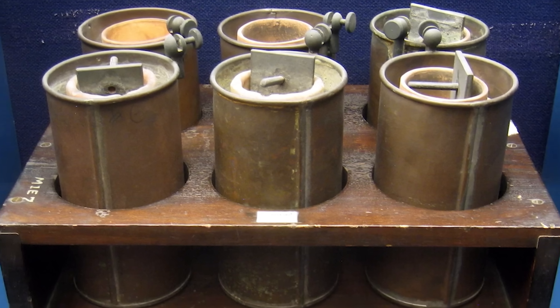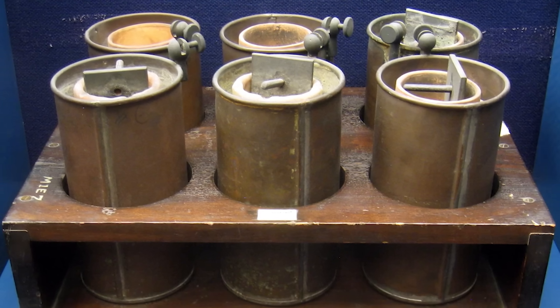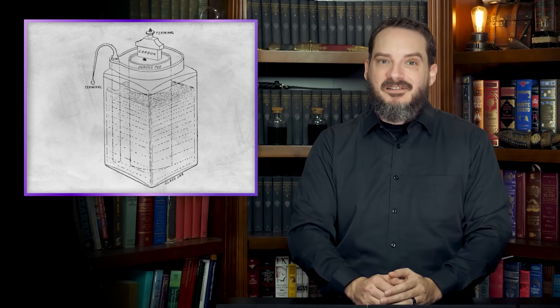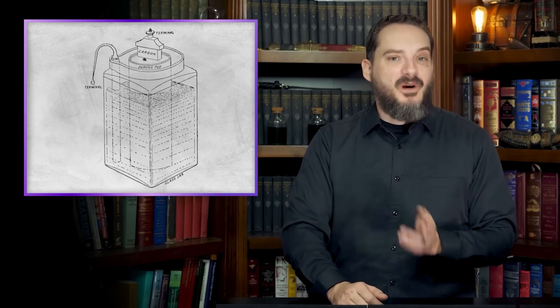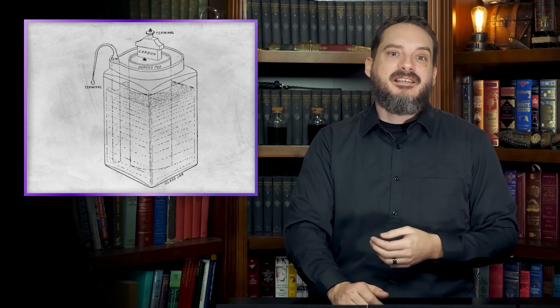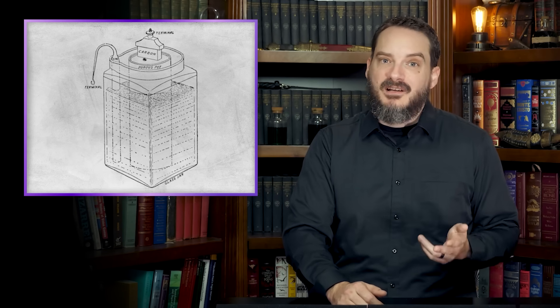The next major development in battery technology, and the ancestor of the compact batteries we use every day, was the Leclanche cell, invented in 1866 by French inventor Georges Leclanche. Using a zinc anode, manganese dioxide cathode, and an ammonium chloride electrolyte, the Leclanche cell produced 1.4 volts, and quickly replaced the Daniel cell for use in telegraph and telephone networks.